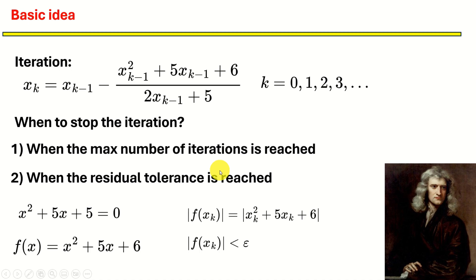However, the main question is when to stop the iteration. There are two approaches that should be combined. We can stop when the max number of iterations is reached — for example, you can set the max number of iterations to 100 or so. The next criterion is when the residual tolerance is reached.